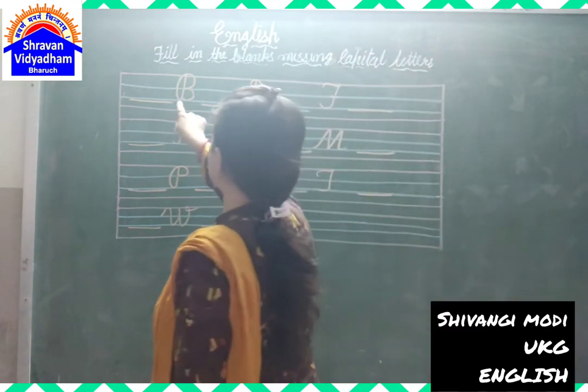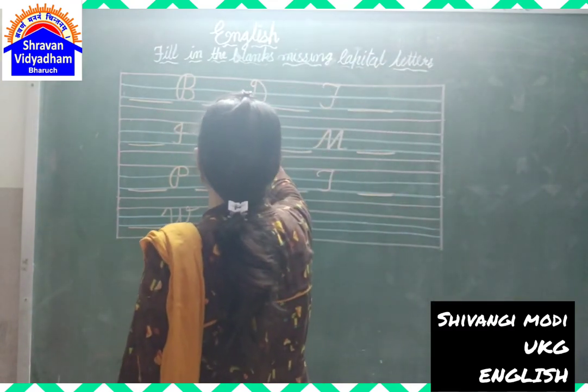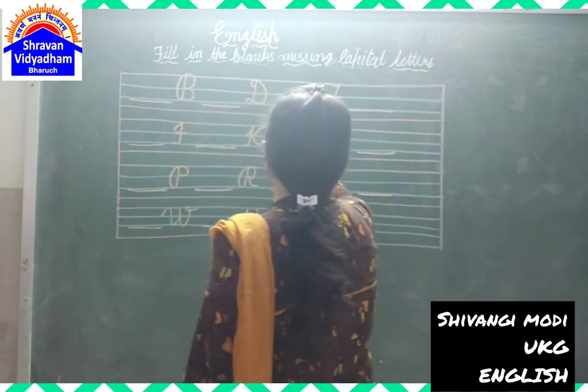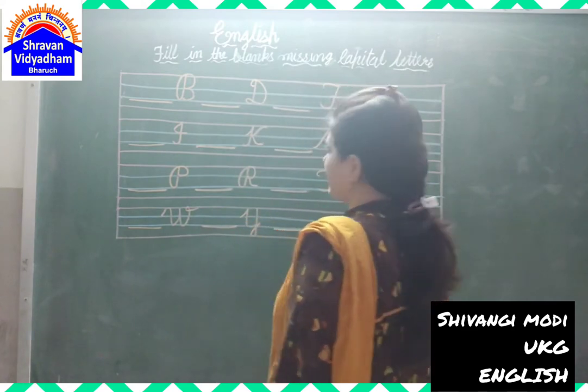The pattern is: dash, B, dash, D, dash, F, dash. So the missing letters need to be filled in.